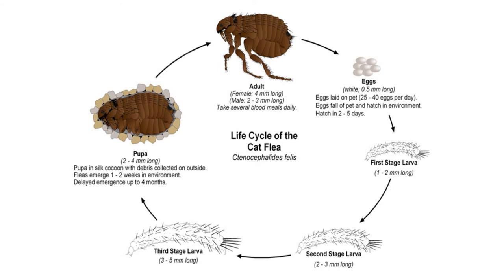Common treatments include body shaving and medicated shampoos and combing. When preventing fleas, it is important to treat both the host and the environment. Household pets should be treated to prevent infestation. Carpets and other floor surfaces should be shampooed and vacuumed regularly. When dealing with an infestation, bedding and clothing that may have been exposed should be washed thoroughly in hot water. In extreme cases, extermination by a professional is necessary.